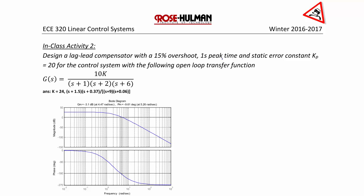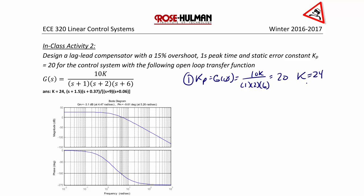Step one: kp is equal to G(0), which equals 10k over 1 times 2 times 6, which equals 20. So k is equal to 24.